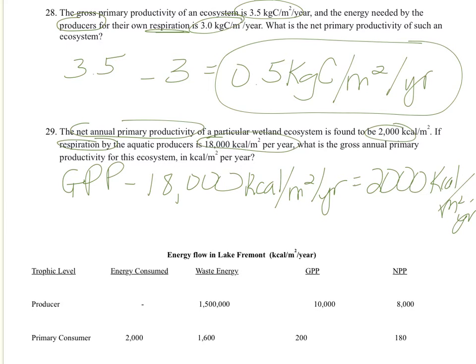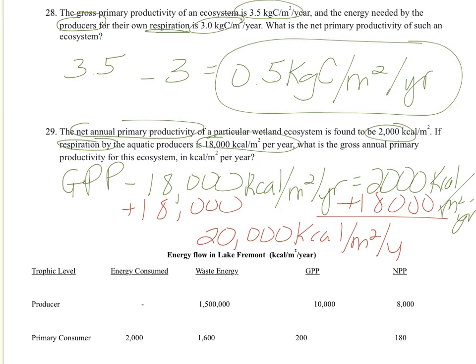Alright, so now we can just solve. So we can kind of do this one in our head, and that's okay. As long as you write out the problem on an FRQ, then you can do the solution in your head. And so the solution, we just can kind of figure out that it's 20,000, because 20,000 minus 18,000 is 2,000. Or we can just do this. And our answer is 20,000. And again, our units. Kilocalories per meter squared per year.